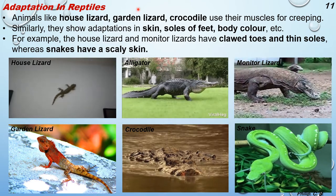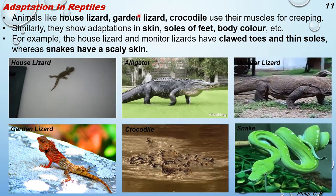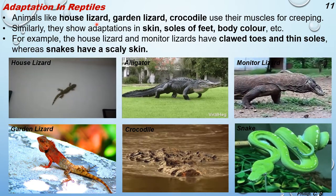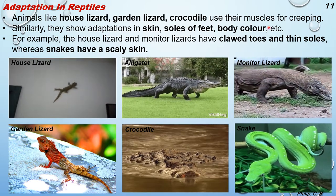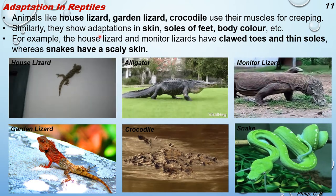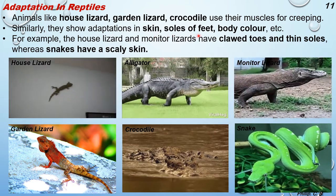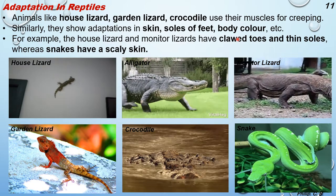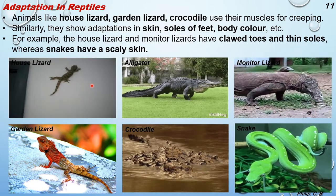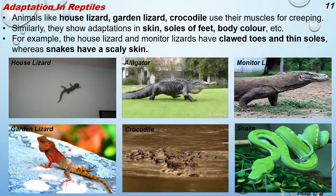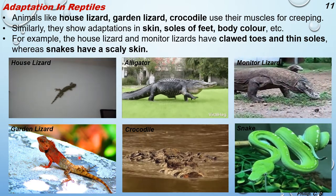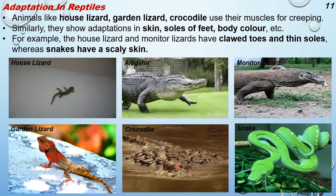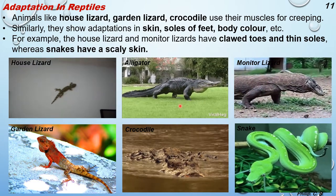Next, adaptation in reptiles. The term 'reptile' means creeping or crawling animals. Animals like house lizard, garden lizard, and crocodile use their muscles for creeping. They show adaptation in skin, soles of feet, and body color. You can see images of a house lizard, a garden lizard also known as Calotes, and a crocodile along with its relative the alligator - see how the alligator is walking around.